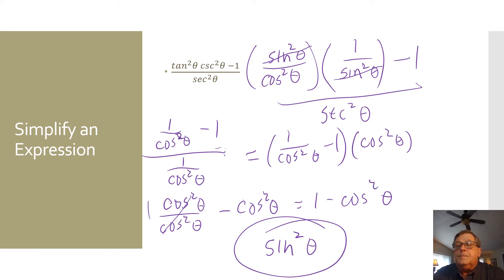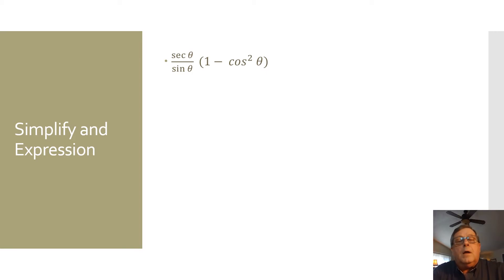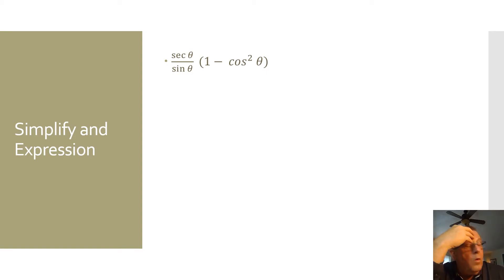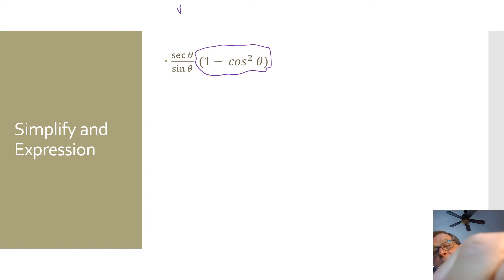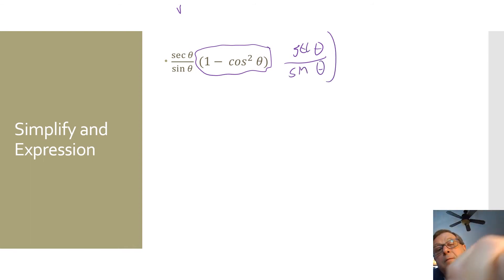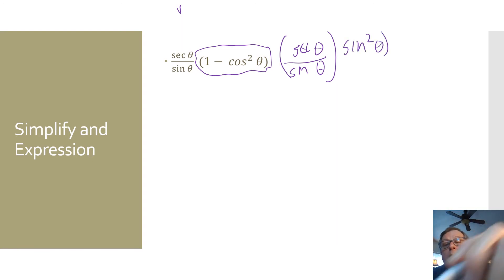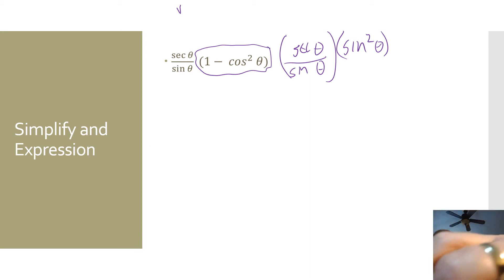Let's do one more. We've got secant of theta divided by sine of theta, times 1 minus cosine squared of theta. I recognize right away that 1 minus cosine squared of theta equals sine squared of theta by the Pythagorean identity. So now we've got secant of theta over sine of theta, multiplied by sine squared of theta. We can do a bit of cancellation, making this the sine of theta.